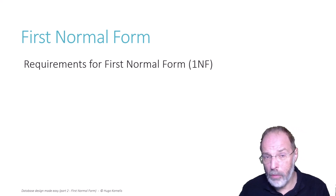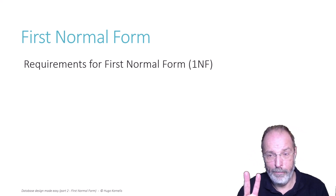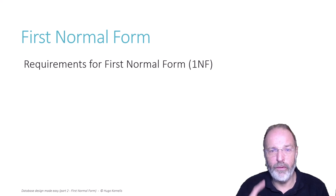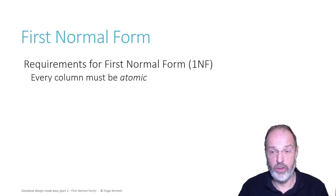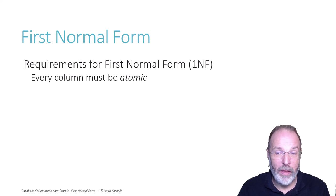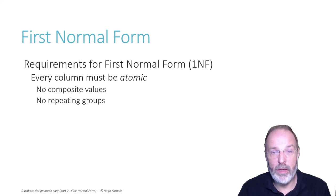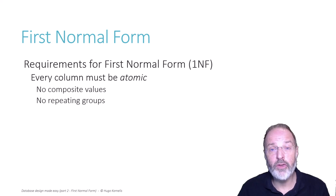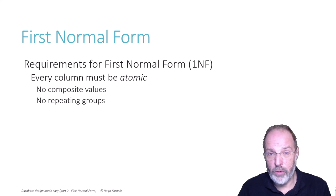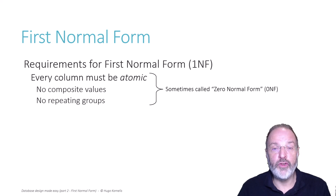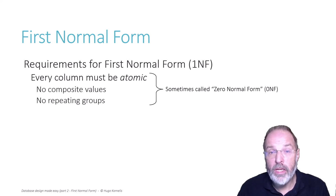For a table to be in first normal form it has to satisfy two criteria. The first of those is that all the values we store have to be atomic values. A value is atomic when it is not a composite value and not a repeating group. This requirement is so fundamental to data modeling and to the relational data model that it is sometimes also called zero normal form, but officially it's part of first normal form.